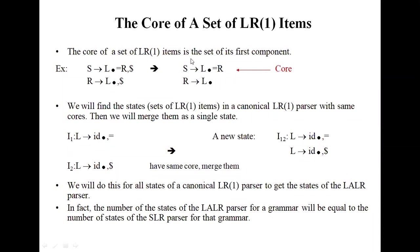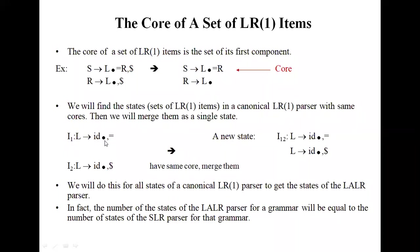This is the LR1 parser core part. From this core part, we will find that L produces ID dot. One state I1 equals L produces ID dot, comma. And again for I2, L produces ID dot, comma dollar.